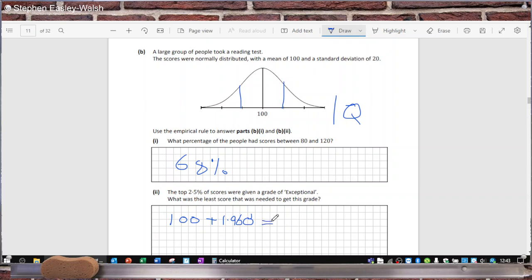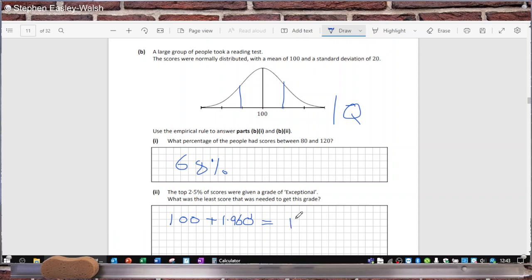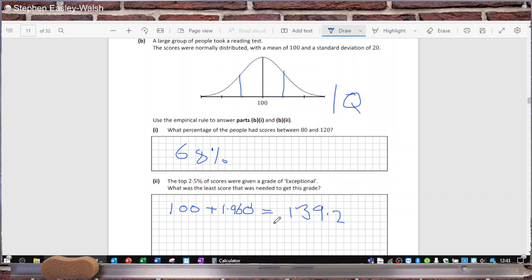Now, 1.96 times 20 is 39.2, so it's 139.2. Now, the problem is, some people use two standard deviations. And because this is a test, you might say that you can't have a decimal score. So there's two reasons why you might be justified to round this up to 140.